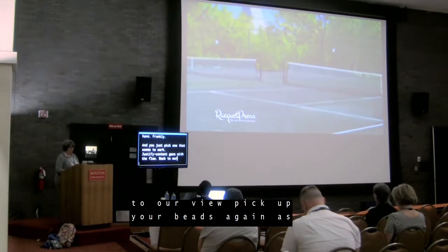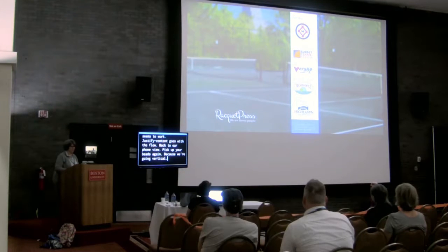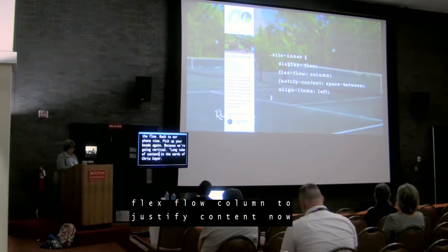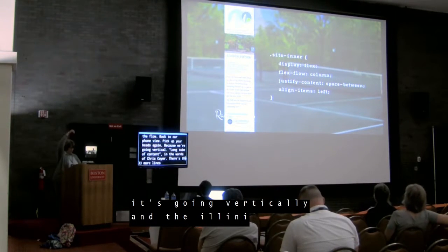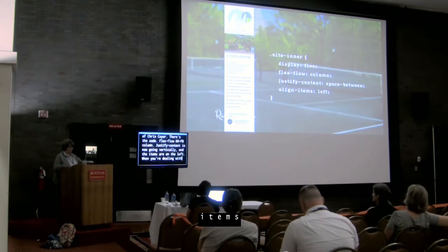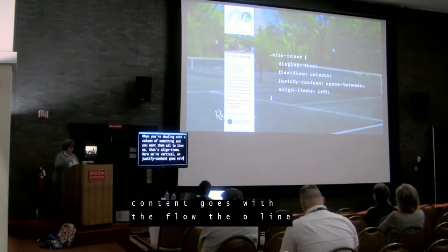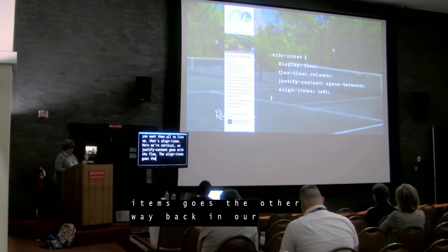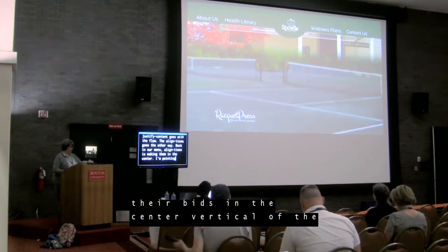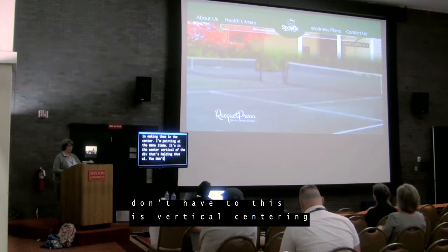Back to our phone view. Because we go vertical — a long tube of content, in the words of Chris Coyer. Flex-flow column. Justify content — now it's going vertically. And the align items are on the left. When you're dealing with a column of something and you want them all to line up, that's align items. So here we're vertical, justify content goes with the flow, and align items goes the other way. Back in our menu, align items is making them center — it's in the center vertical of the div that's holding that UL. This is vertical centering, by the way.